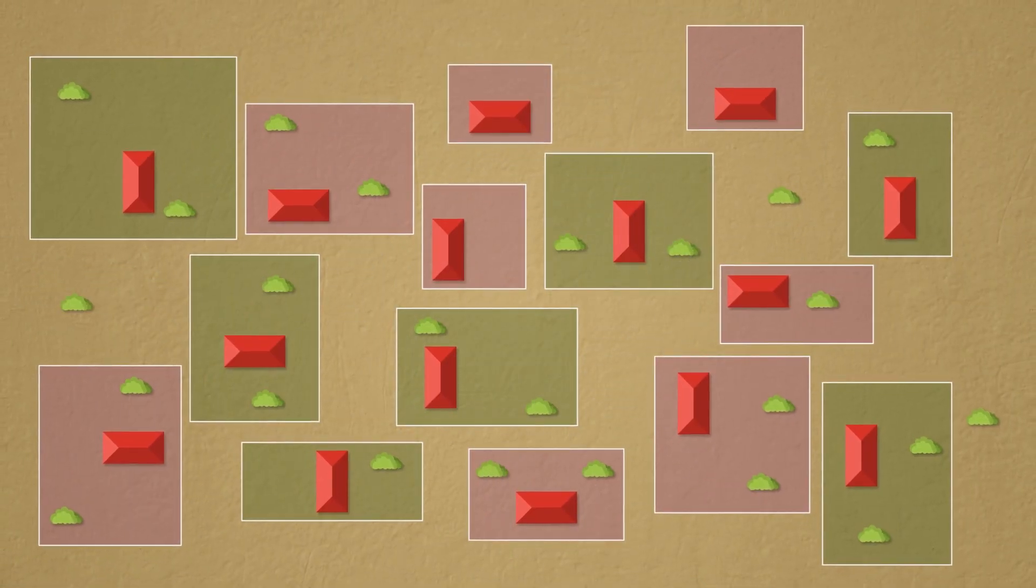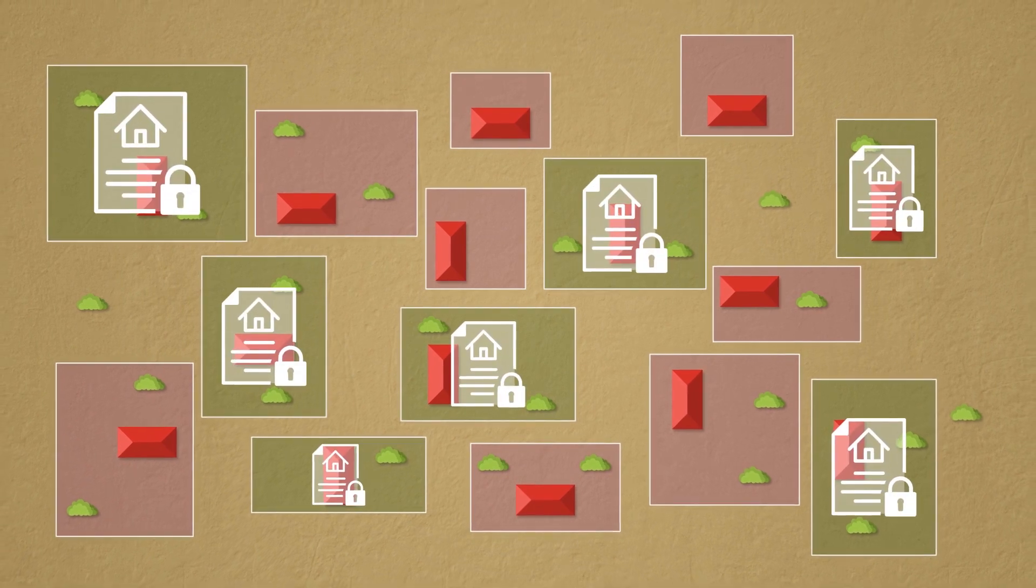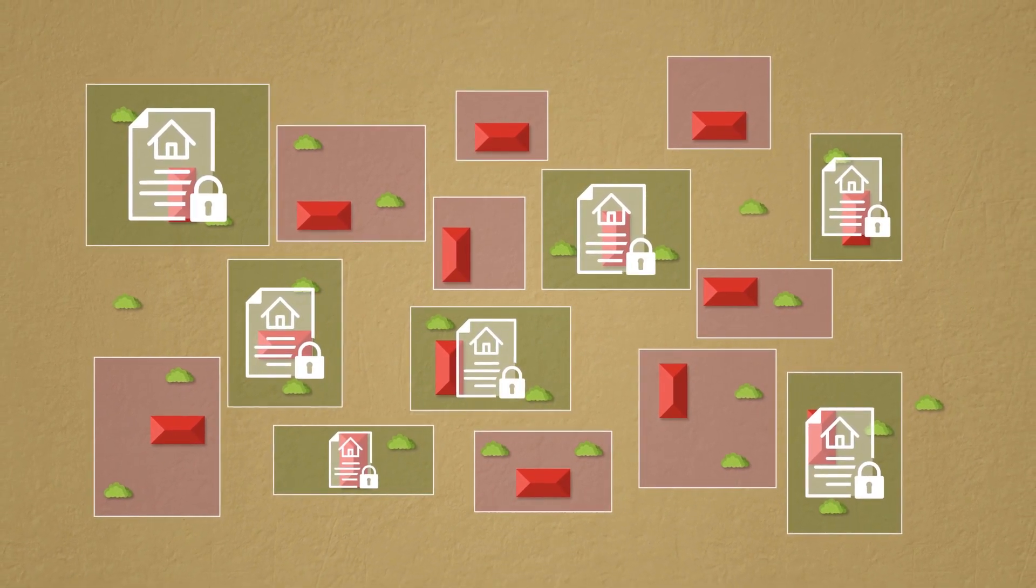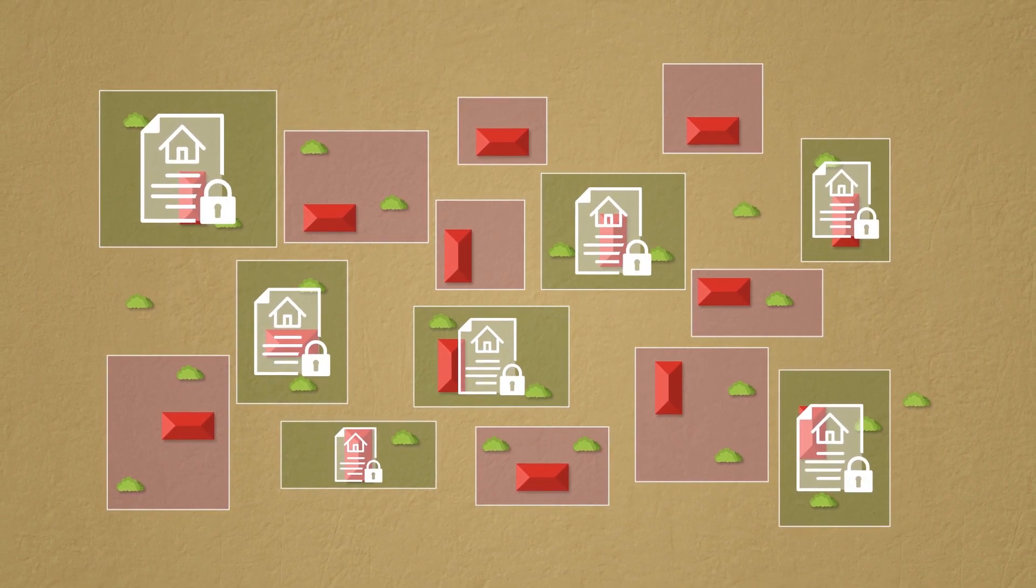As a result, one group of settlers obtained legal title to the properties where they were living, while another group continued to live on quite similar plots without having legal title.